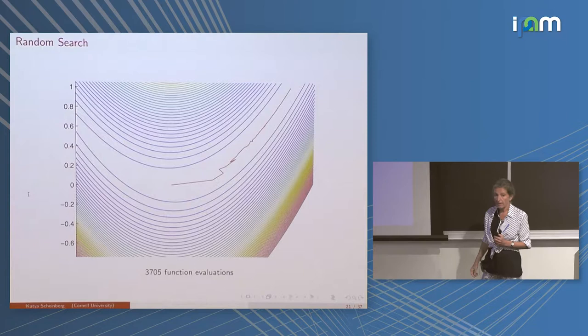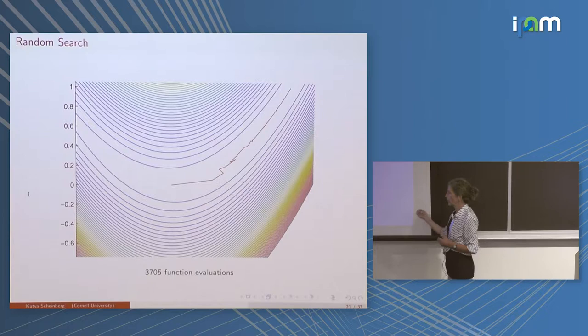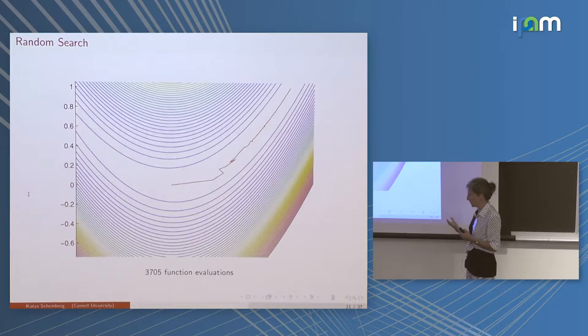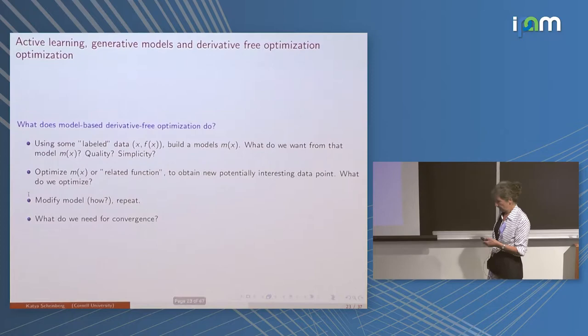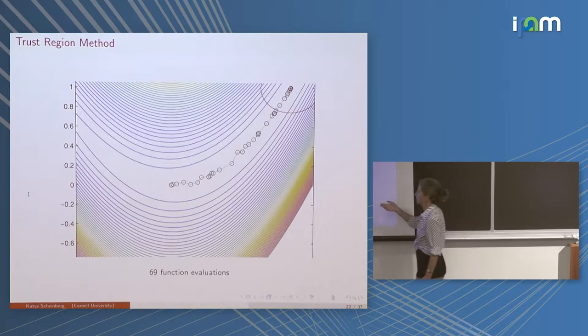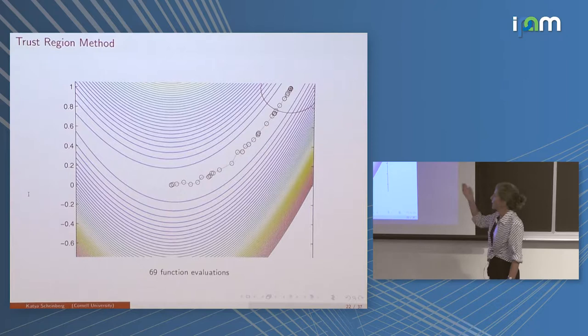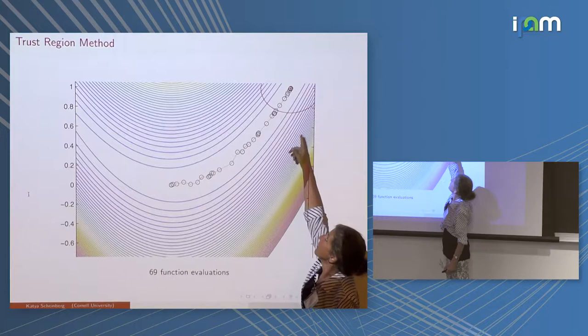The randomized version does better. If you're not exploiting the problem structure and don't know what it is, random may be better. The trust region method exploits curvature and converges in 69 function evaluations — way more efficient. By 'converge' I mean converge to a very accurate solution; you can see it gets very close quite quickly.